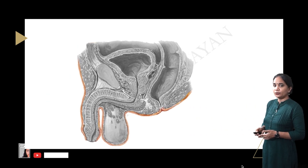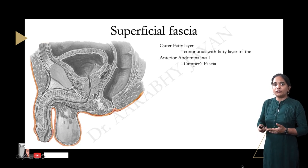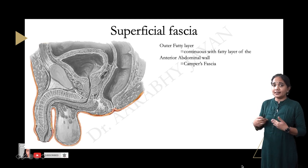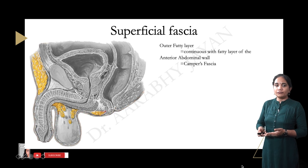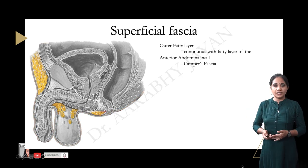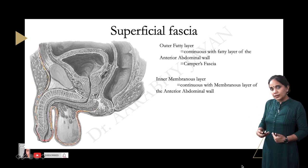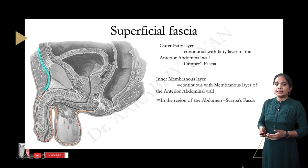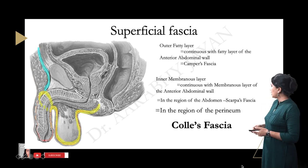The superficial fascia of the perineal region is arranged very similarly to the abdomen, with an outer fatty layer and an inner membranous layer. The outer fatty layer is continuous with the fatty layer of the anterior abdominal wall, also called Camper's fascia. The inner membranous layer is continuous with the membranous layer of the anterior abdominal wall, which is Scarpa's fascia. This inner membranous layer in the region of the perineum is called Colles' fascia.